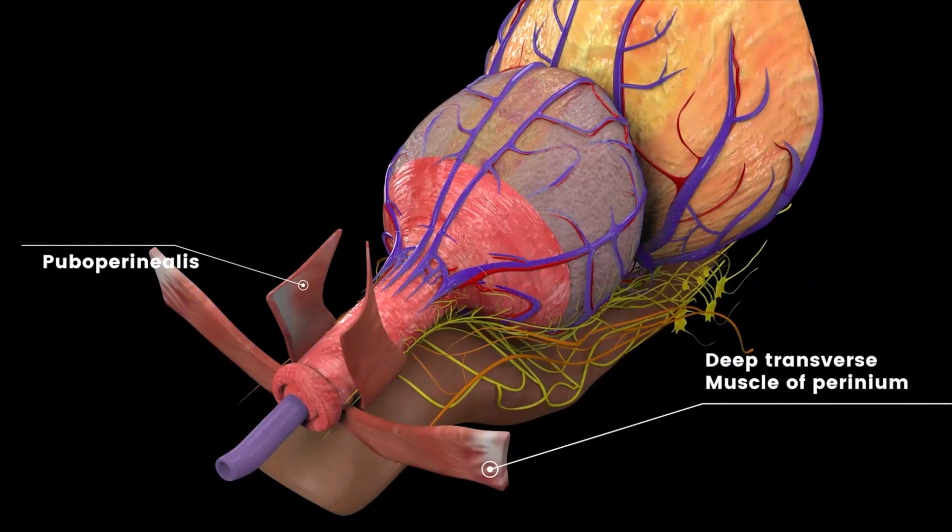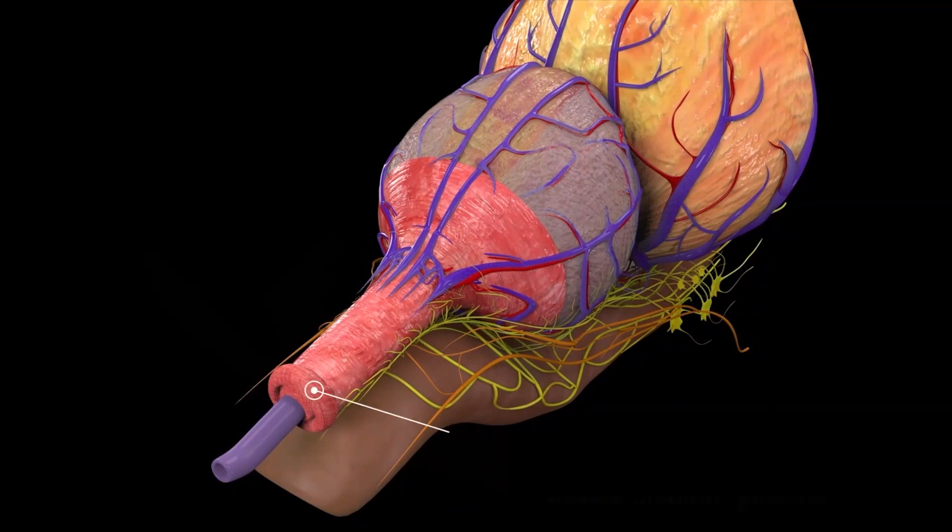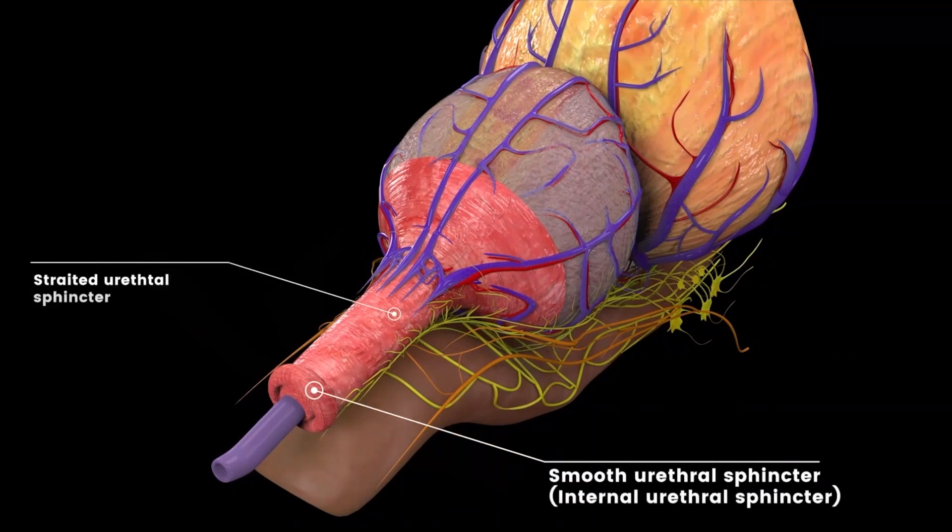The urethral sphincter complex consists of the external rhabdosphincter, inner lissosphincter, and the membranous urethra with surrounding supporting structures like the pelvic diaphragm and supporting fascia.